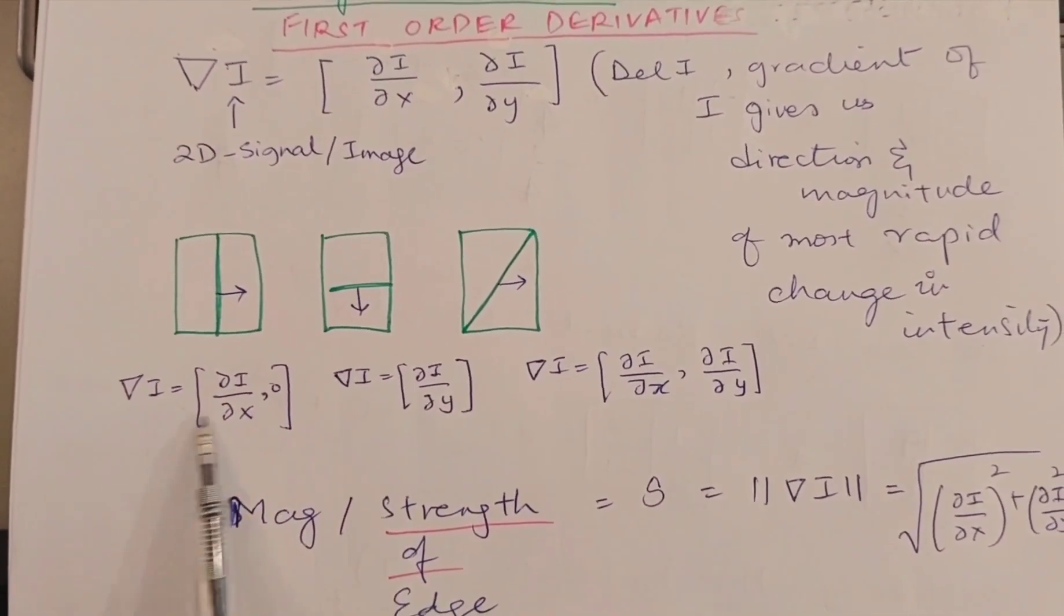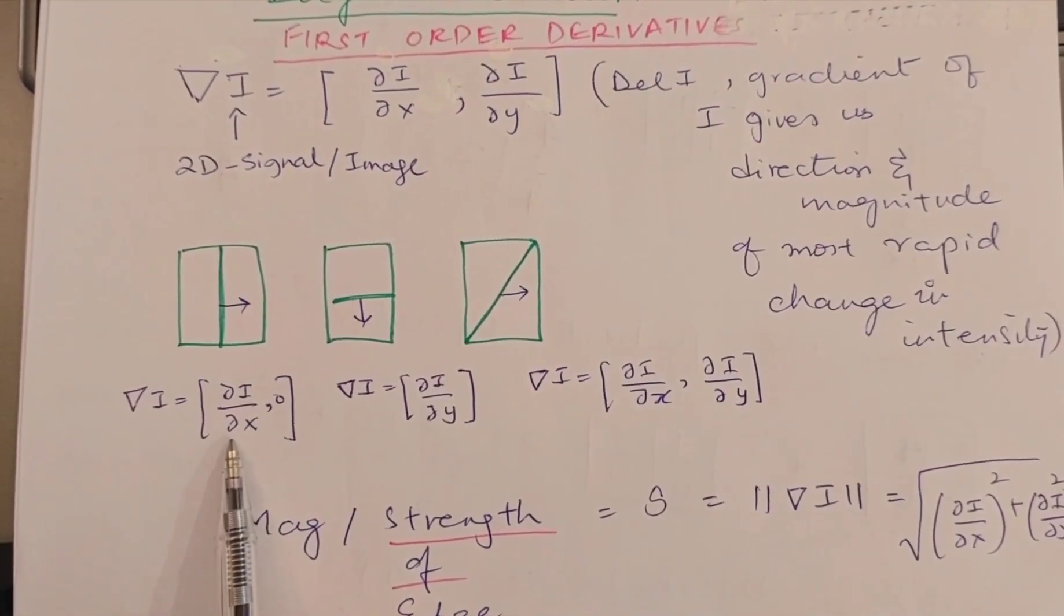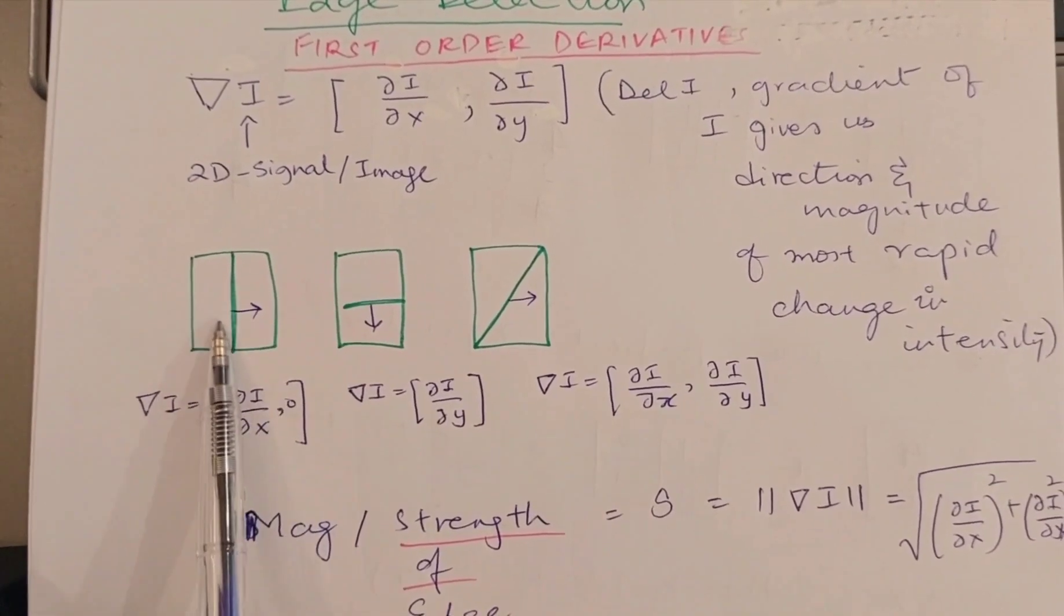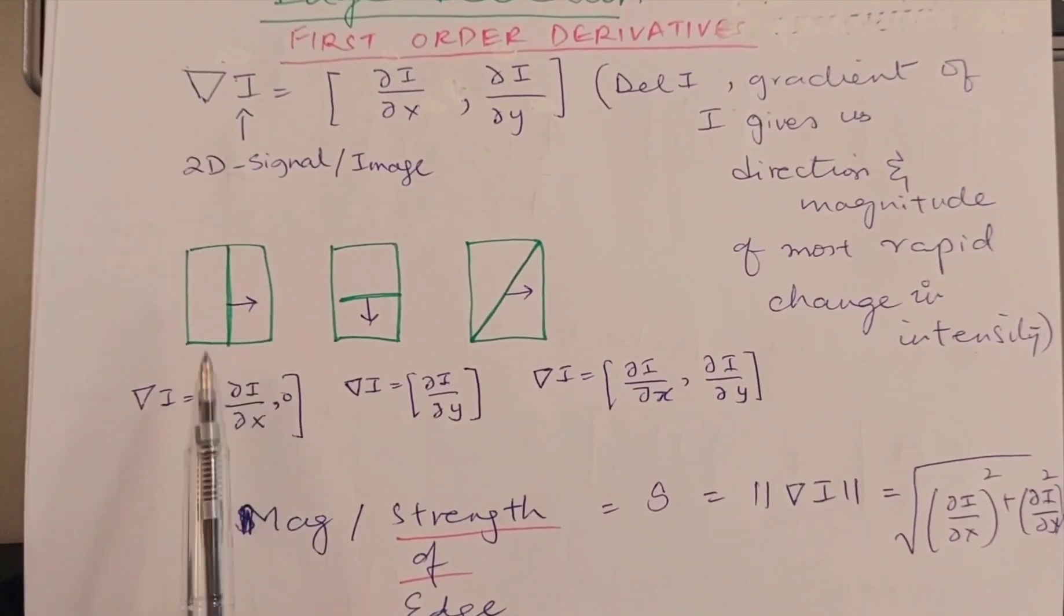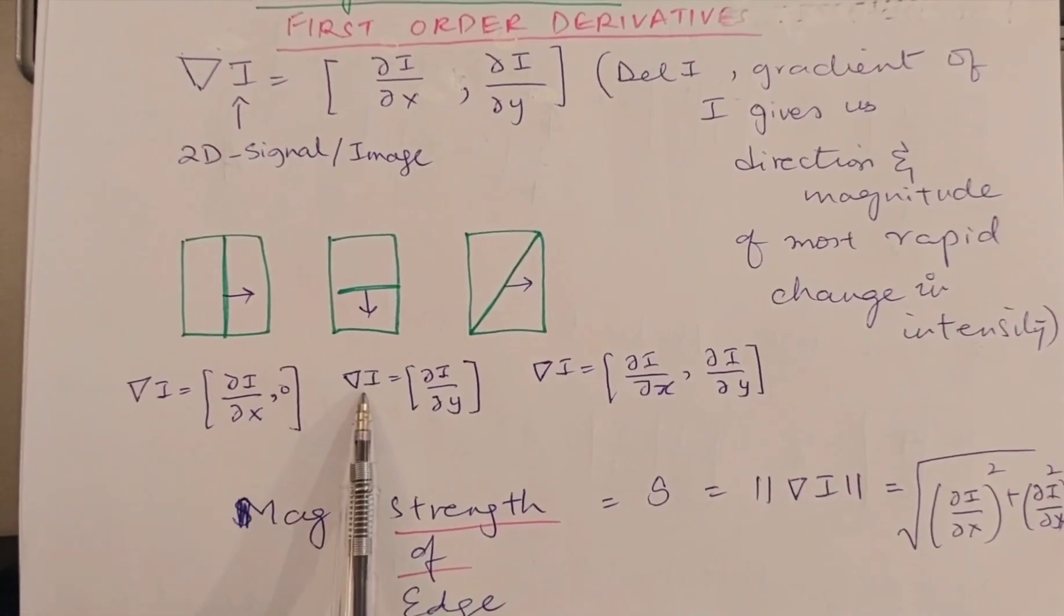Because if you move a window over here, there will be no movement along the y-axis. Similarly, if I have an edge like this, in this case the gradient will have a component like this because if I move a window over here, then it will only give changes along the y-axis.